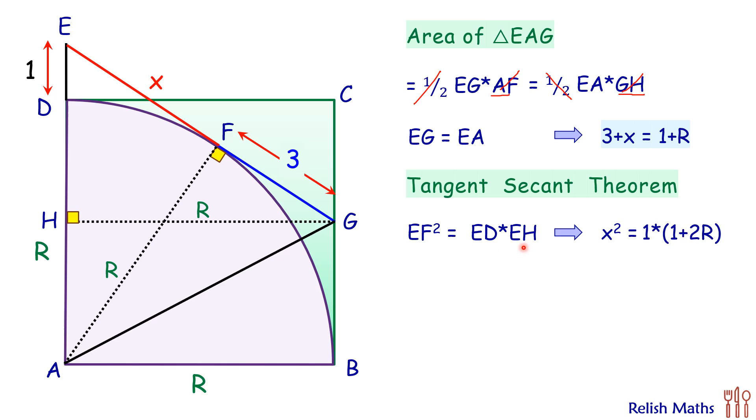Now here in this x, we'll put the value of x as R minus 2. So we'll get (R - 2)² = 2R + 1. Opening up the bracket and simplifying it, we'll get R² - 6R + 3 = 0. So this is a quadratic in R.